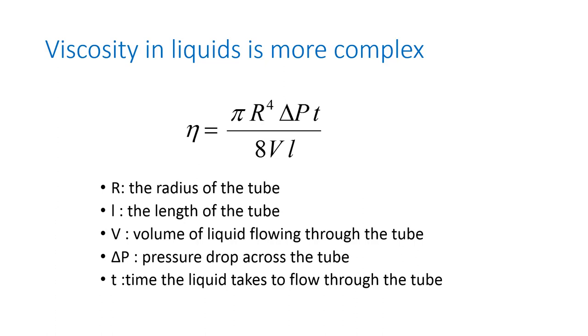So the viscosity, which is eta, depends on the radius of the tube and the length, depends on the volume of the liquid flowing through the tube, and the pressure drop from the beginning of the tube to the end. And that also depends on the time the liquid takes.